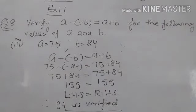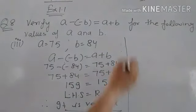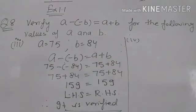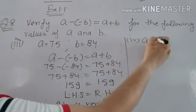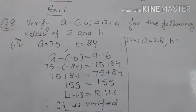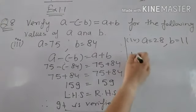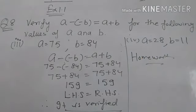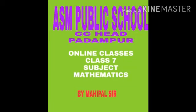Now the fourth part is for your homework. The values are a equals 108 and b equals 11. So this is the question for your homework — do it yourself. Thank you.